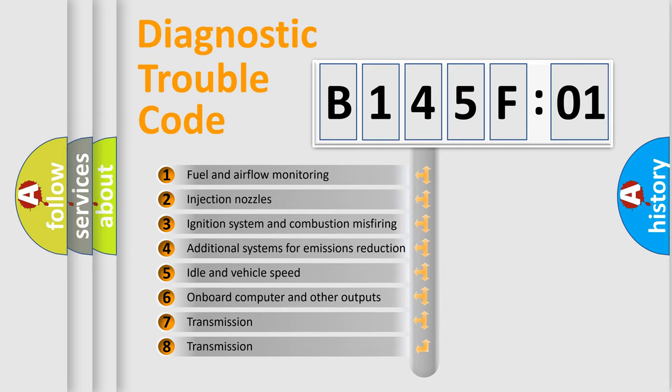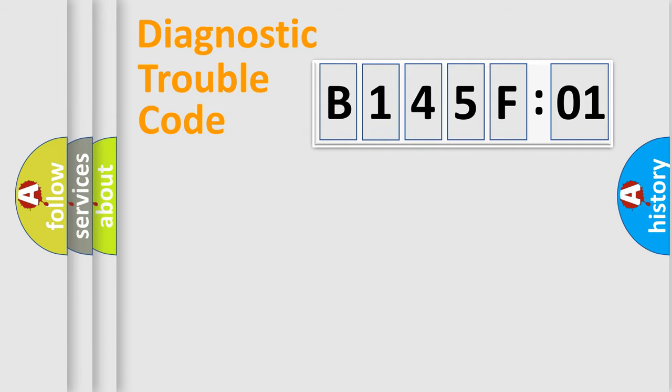The third character specifies a subset of errors. The distribution shown is valid only for the standardized DTC code. Only the last two characters define the specific fault of the group.